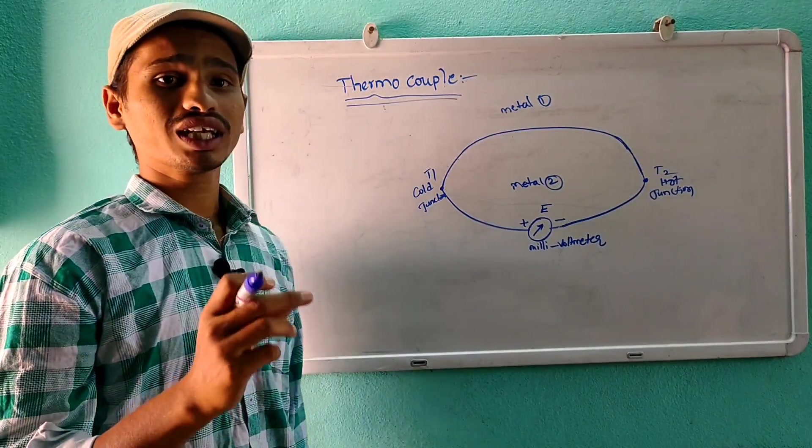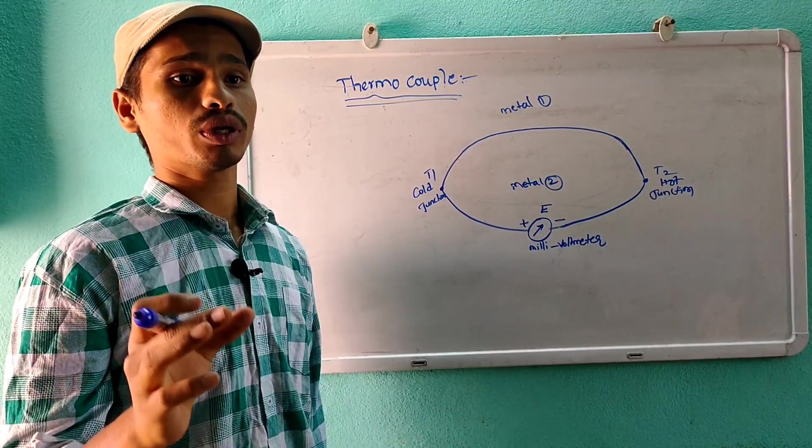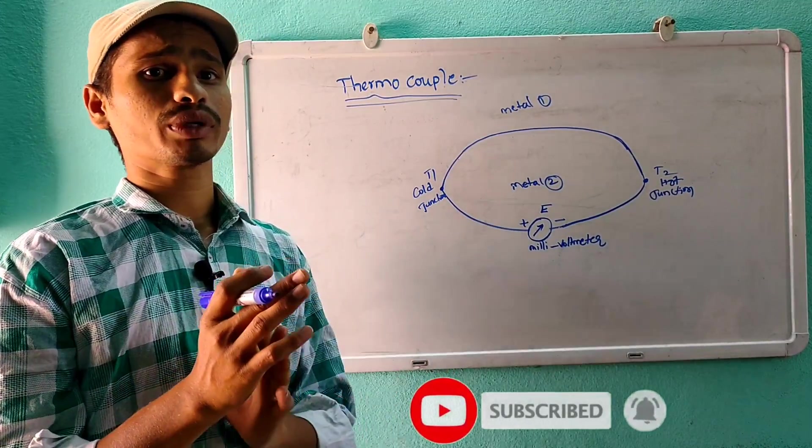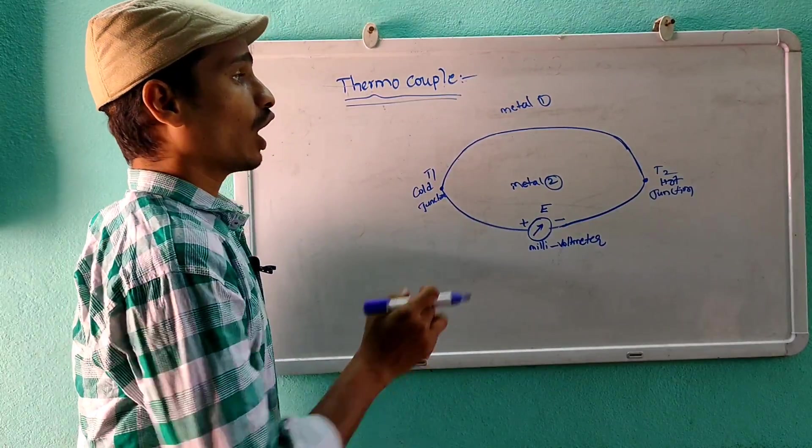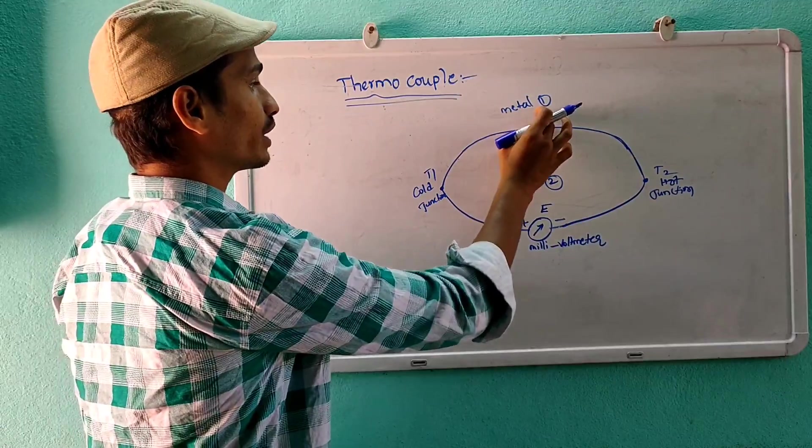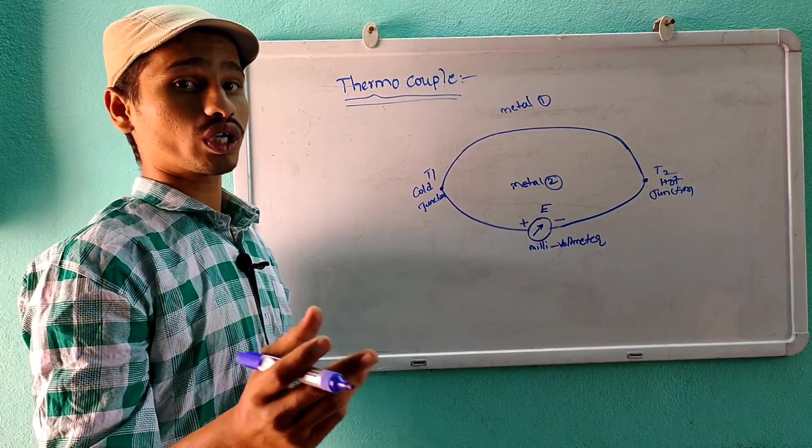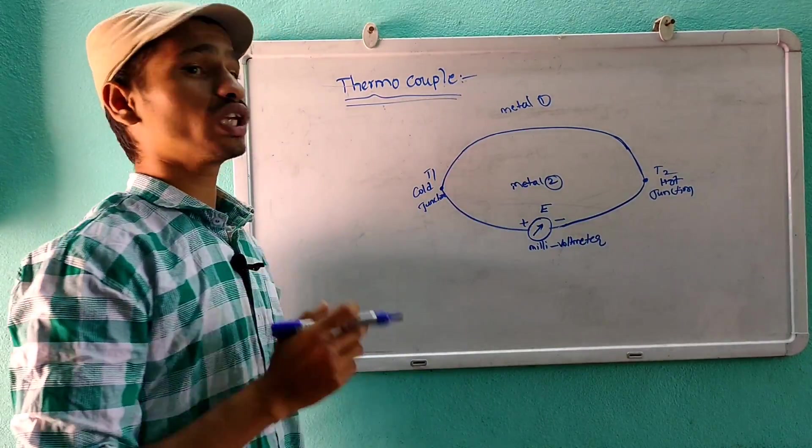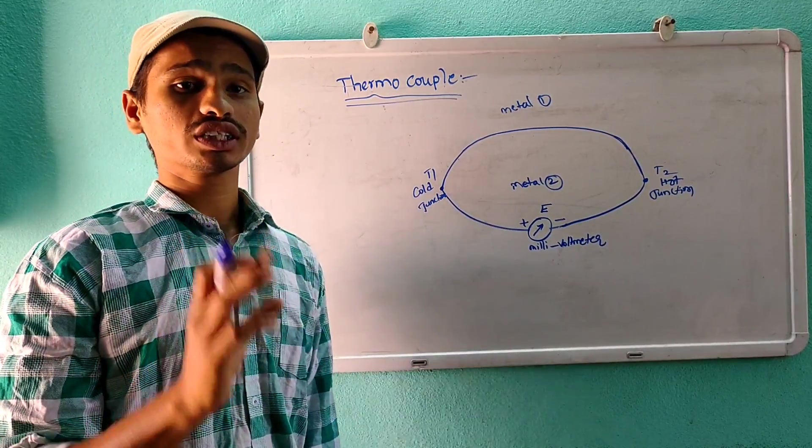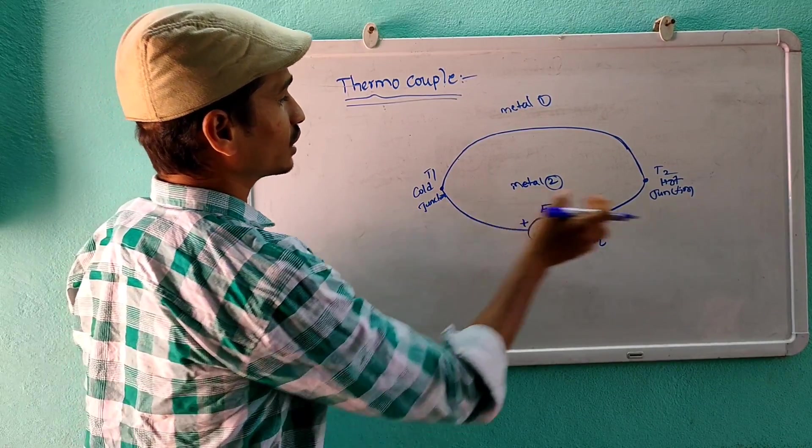Thermocouple is basically a temperature sensing device. This is a temperature sensor device which is used to measure temperature, basically consisting of two metals of different materials joined together to form a junction. Two metals of different materials are joined, and the join is the junction. The different materials are two metals, and the junction becomes the hot and cold junction.